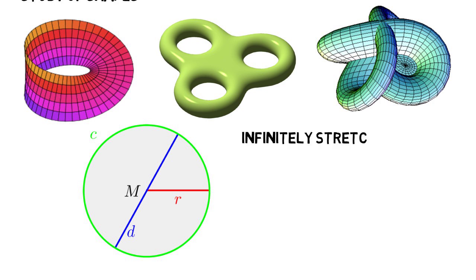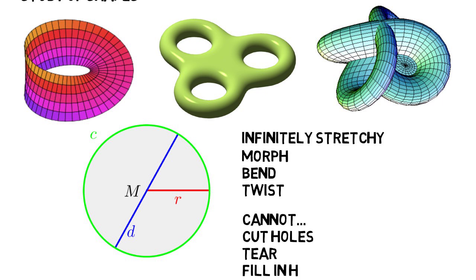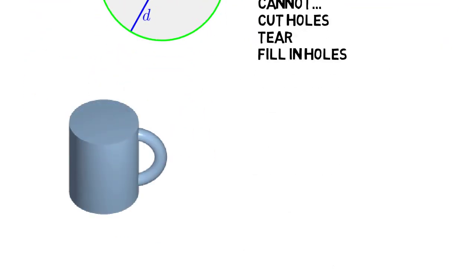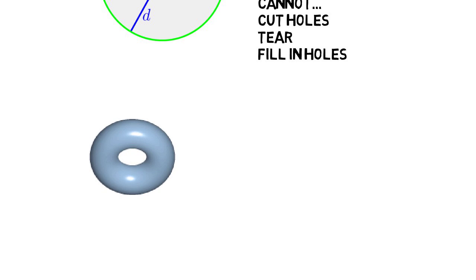You can morph, bend, and twist them all you want. But you cannot make holes, tear the shape, or fill in already-made holes. So in topology, a coffee mug is the same as a donut, because you can morph one into the other without making new holes or anything like that.